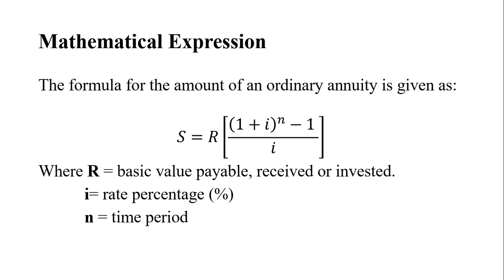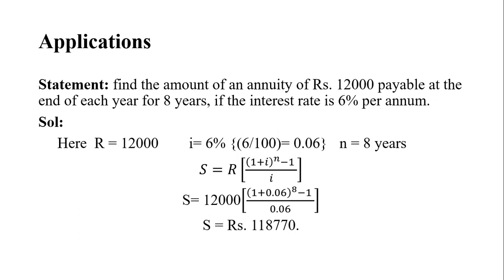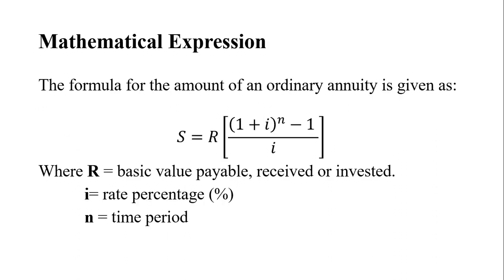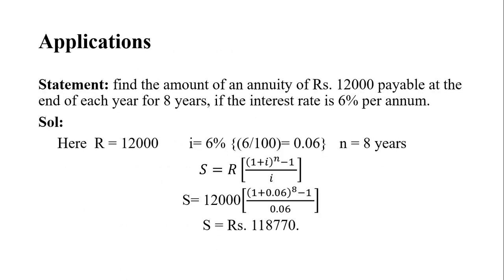First application of annuity: find the amount of an annuity of Rs. 12,000 payable at the end of each year for eight years, if the interest rate is 6% per annum. In this example, 12,000 is the value which is payable, so 12,000 should be considered as R.